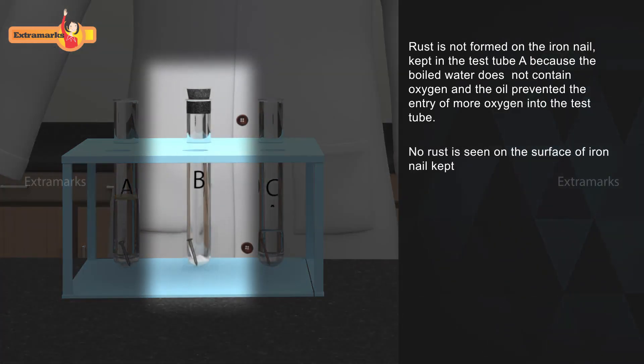No rust is seen on the surface of iron nail kept in the dry air in test tube B because the anhydrous calcium chloride had absorbed the moisture from the damp air present in the test tube and made it dry or free from water.